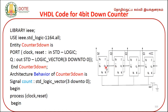For the asynchronous down counter, the Q-bar output is used as the clock input for the next flip-flop. The outputs measured are Q1, Q2, Q3, Q4. The initial reset condition sets: Q1=0, Q2=0, Q3=0, Q4=0.